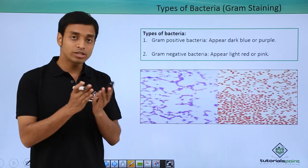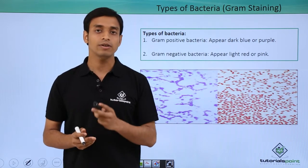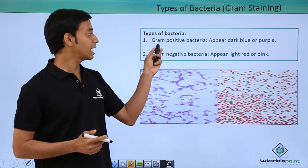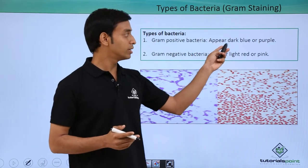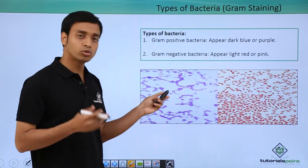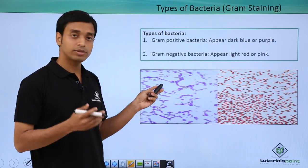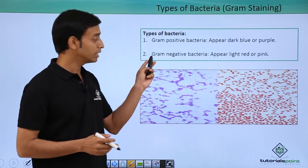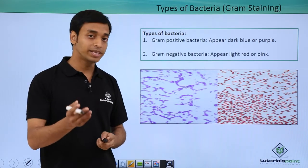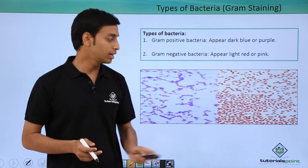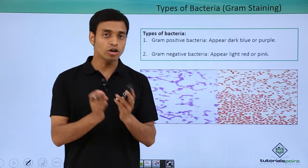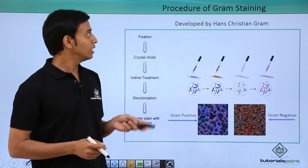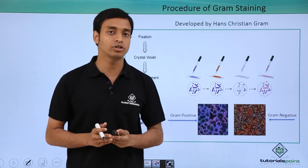Based on gram staining, we get two types of bacteria. Gram positive bacteria appear dark blue or purple in color because they have taken the first stain, crystal violet. Gram negative bacteria appear light red or pink in color because they have taken not crystal violet but the counter stain, which is safranin.